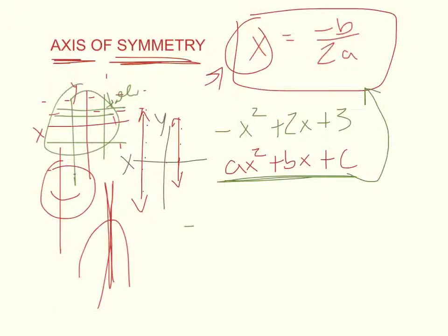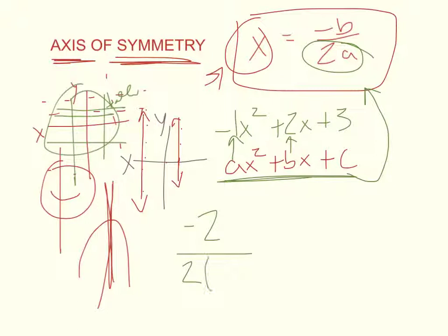So we've got negative b — and what's our b? 2. Be conscious of the signs. So it's negative 2 over 2a. Now, our a — there's no number shown there, so what do we use? We always know there's a 1 there, because 1 times anything is still itself, so we just drop it. So it'll be 2 times negative 1. Be conscious of your signs. We simplify: the top stays negative 2, and 2 times negative 1 gives negative 2. What's negative 2 divided by negative 2? Positive 1. So our axis of symmetry is x equals 1.